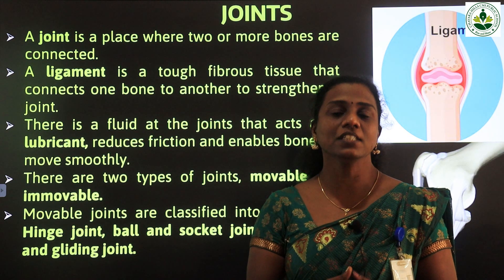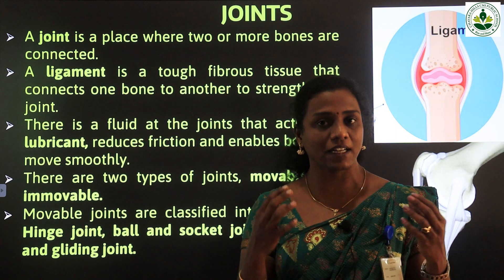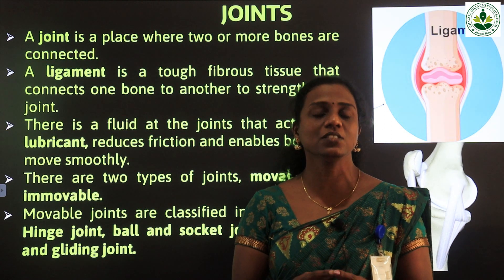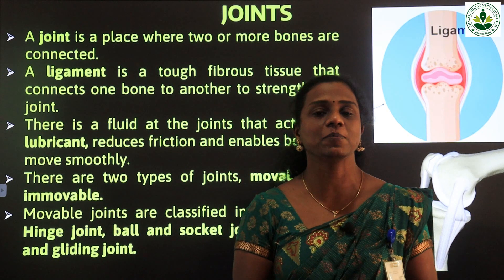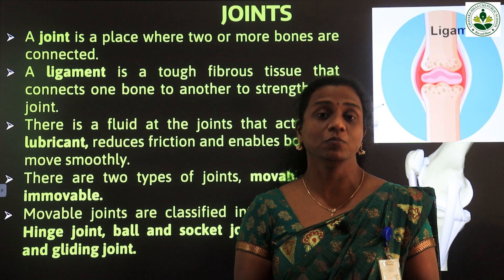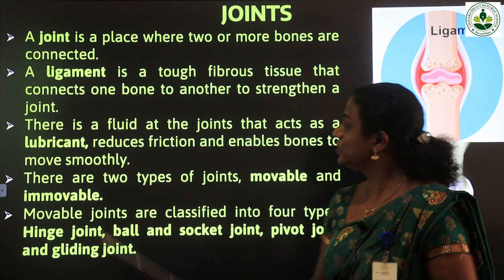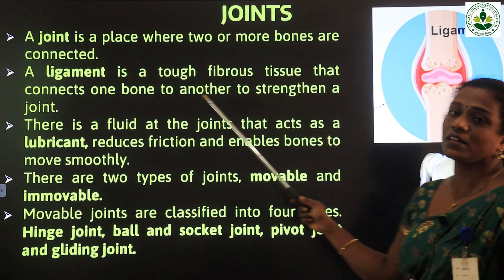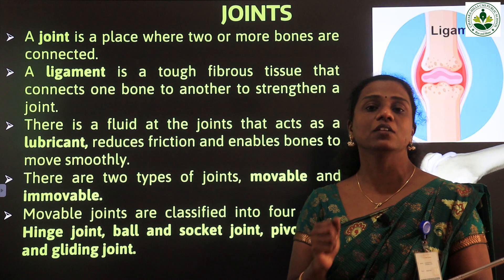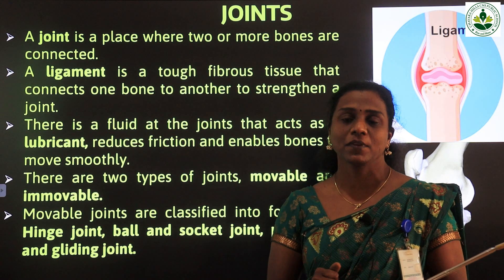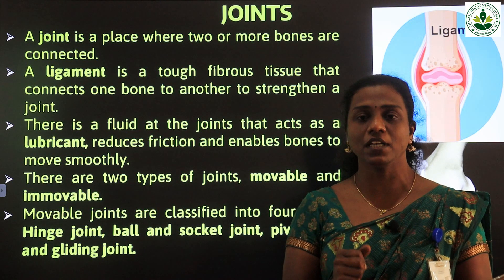A joint is a place where the bones are connected together. The bones are connected together at a particular place — that is known as a joint. Joints hold the bones together and at the same time help in the easy movement of our body. A joint is a place where two or more bones are connected. Joints help to connect the bones together and also help in movement.